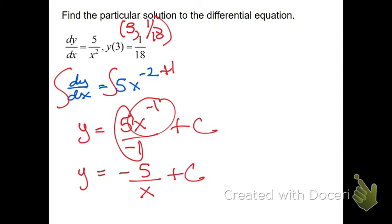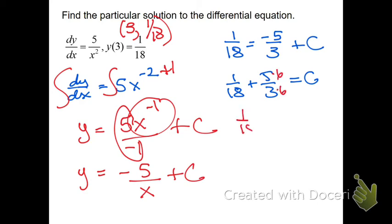I plugged in that x was 3 and y is 1 18th. I'm going to add 5 thirds. So it's 1 18th plus 5 thirds. Well, that's pleasant. Not. Nah, not so bad. Get my common denominator. Make them both 1 18th. So times 6. So it's 1 18th plus 30 over 18.